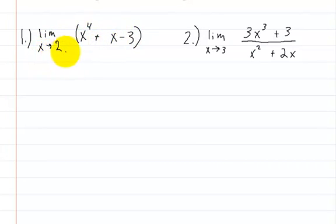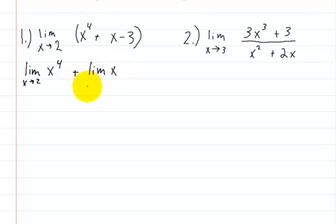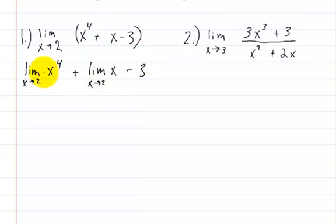...3 as x approaches 2. For this problem we're going to apply the limit individually to each term. So the first one: the limit of x to the fourth power as x approaches 2, plus the limit of x as x approaches 2, minus 3. When you apply a limit to a constant, it's just the same constant.